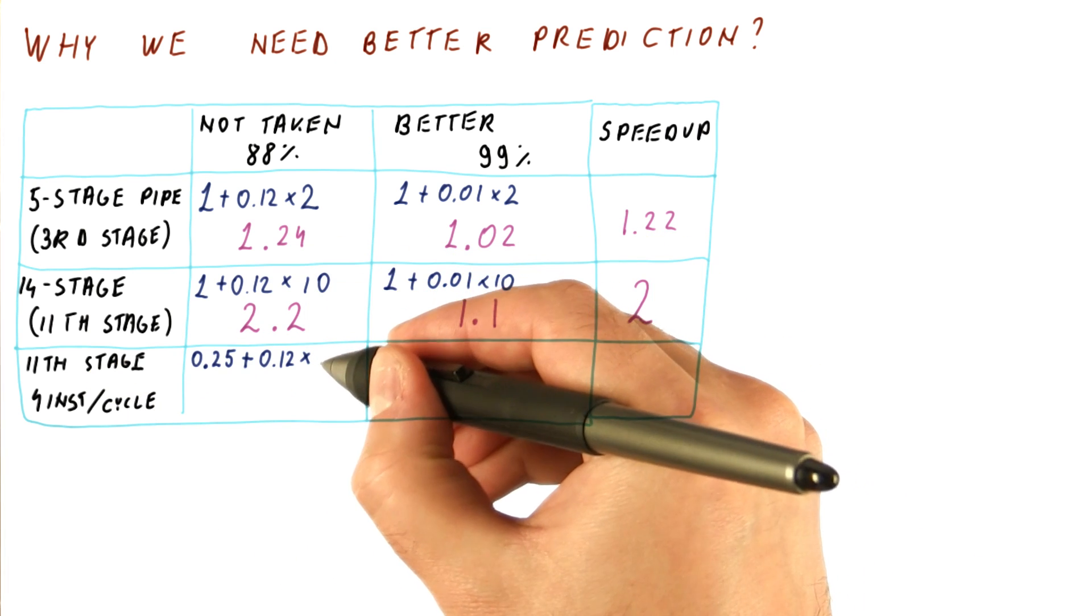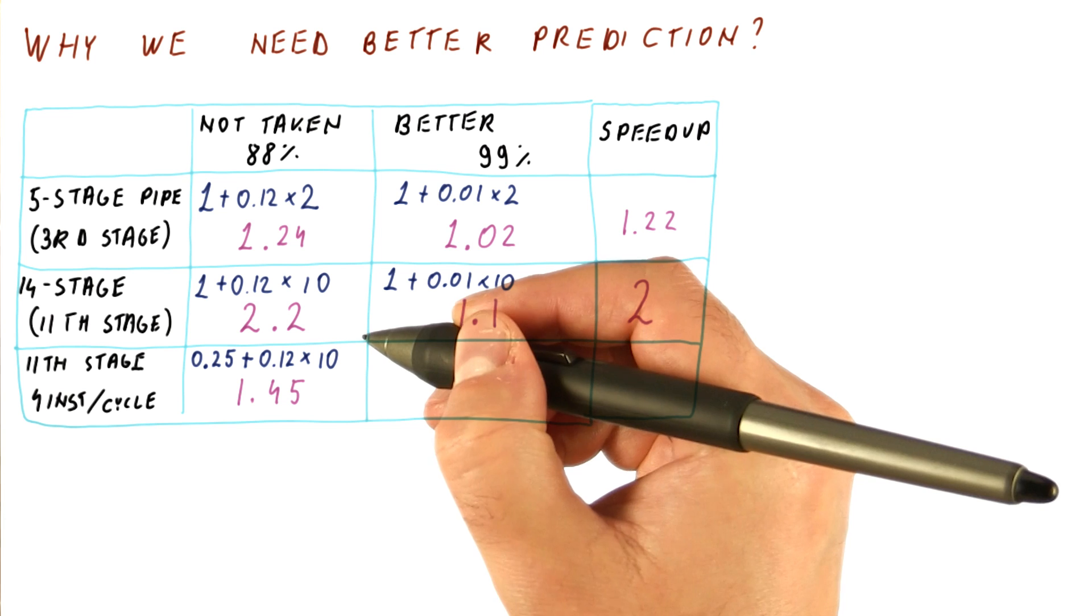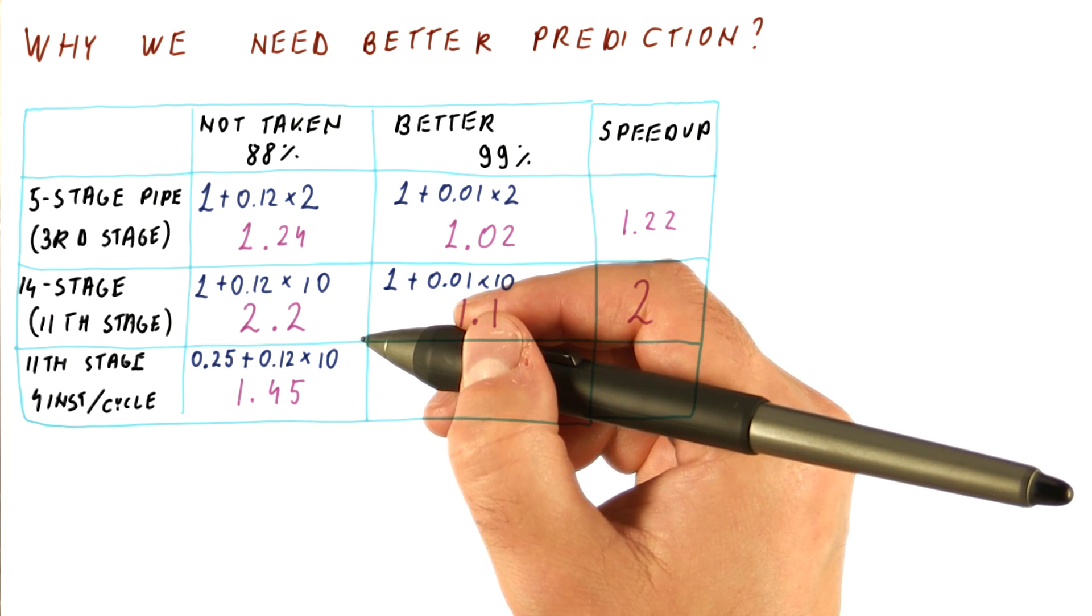So we still have a 10 cycle penalty here, and we get an overall CPI of 1.45.